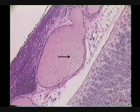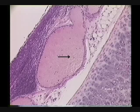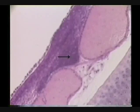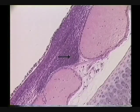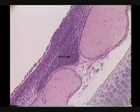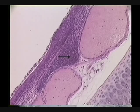Identify the structure occupied by the arrow. It is a vein. Identify the tissue occupied by the arrow. It is blood. Identify the dark material tissue indicated by the pointer. Lymphoid tissue. Yes. Lymphoid nodule right there.